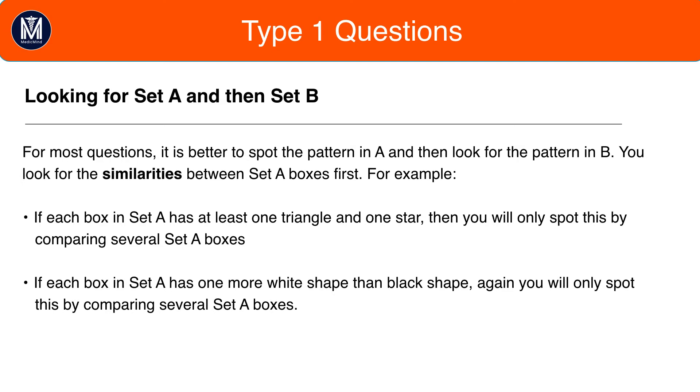So, this is what we covered before. If each box in Set A has at least one triangle or one star, for example, you'll only spot this by comparing several Set A boxes. If each box in Set A has one more white shape than black shape, again, you'll only find it by comparing several Set A boxes, and therefore you look for Set A and then Set B.